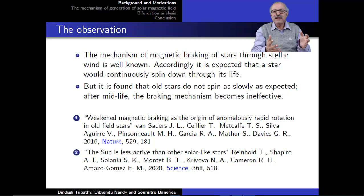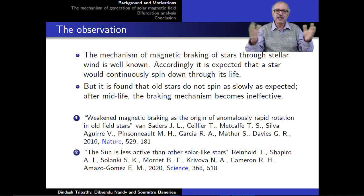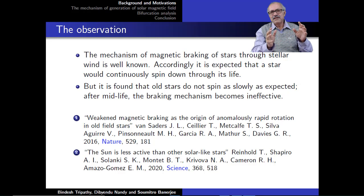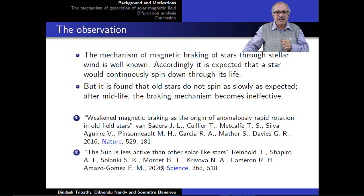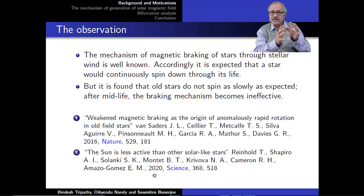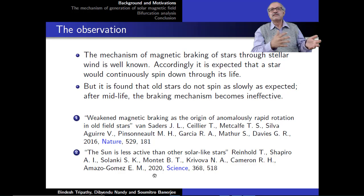Our own sun is right now in its middle age — it is about 4.6 billion years old, with roughly the same time left before it becomes a red giant. So it is natural to think that this stellar midlife crisis should be occurring in the sun right now. Indeed, a paper published in Science in 2020 reported that the sun is less active than other solar-like stars. We wanted to understand this change from a dynamical systems perspective — is this change a bifurcation?